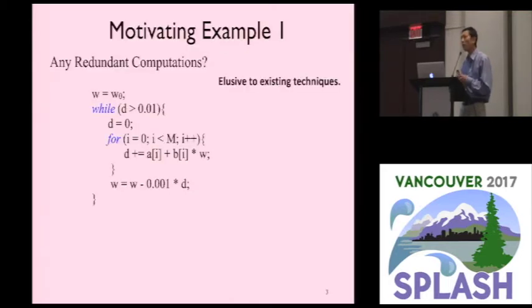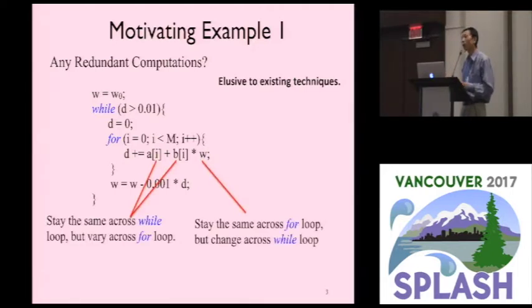Our observation is that there are some large scope redundant computations in lots of loops that are elusive to existing compiler techniques. Here is one example. We have this while loop. Inside there is a for loop. If you look at the innermost statement, this statement actually has three operators on the right hand side. They are invariant, but only to one of these two different loops.